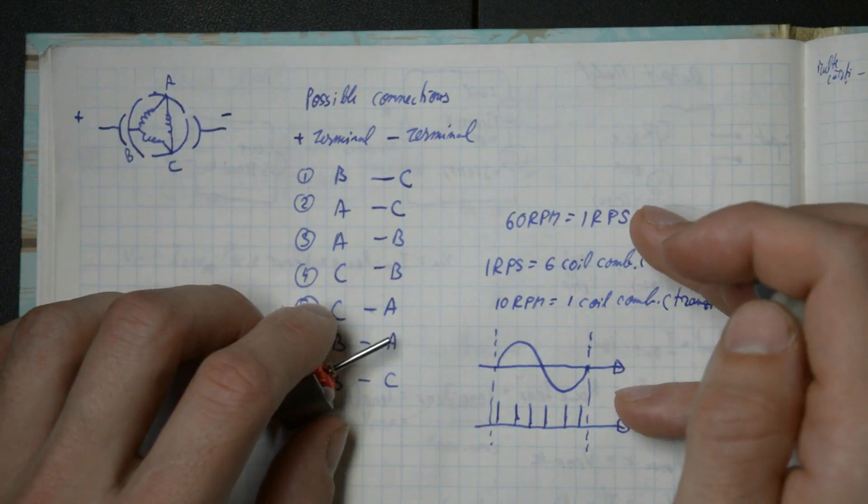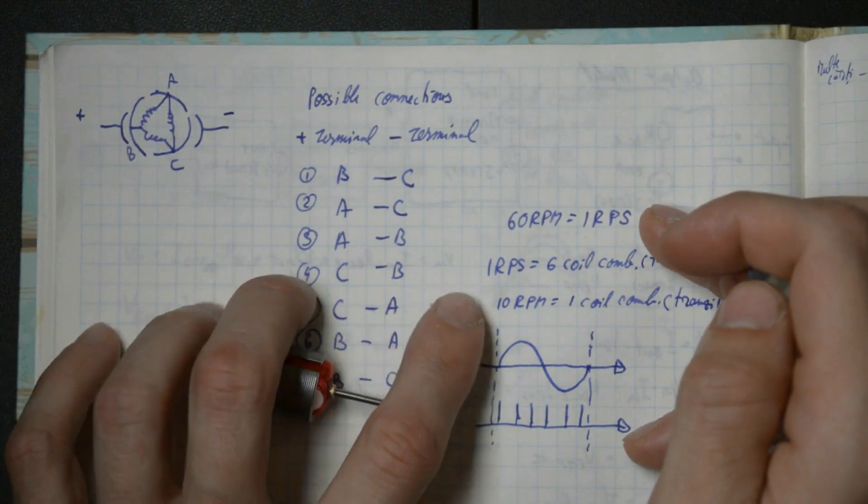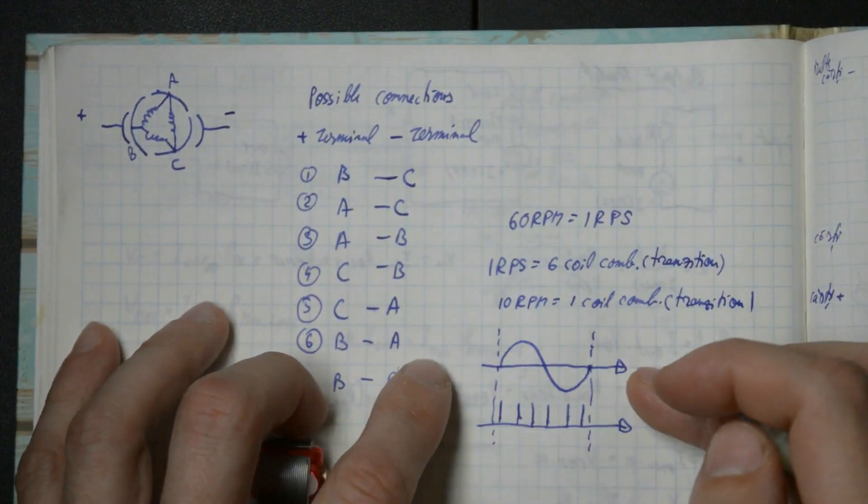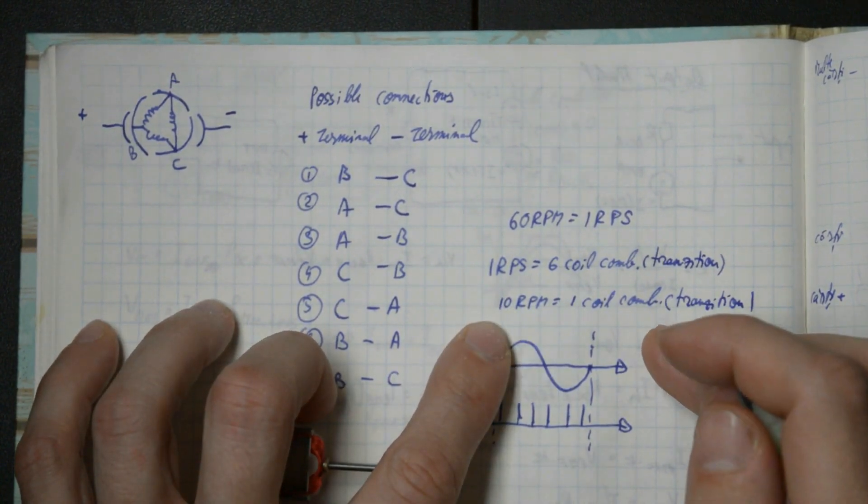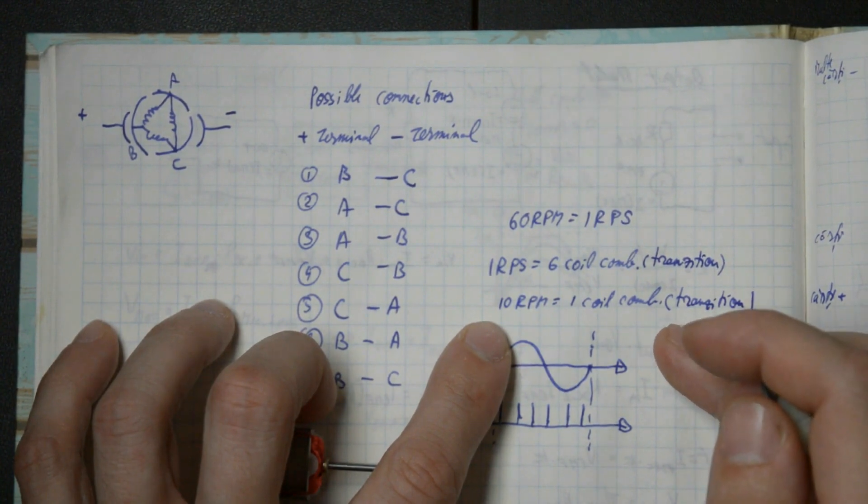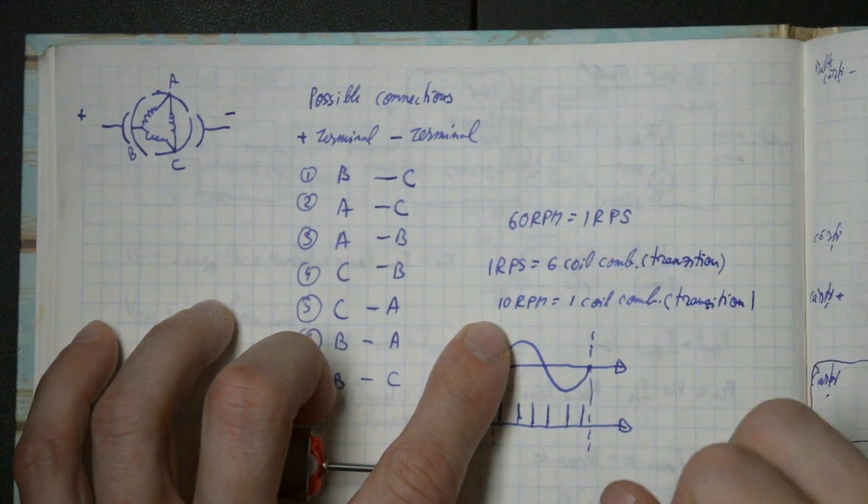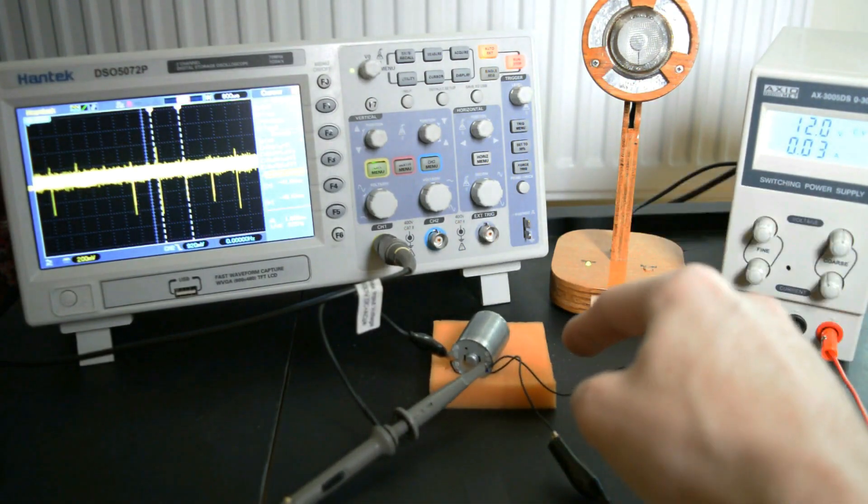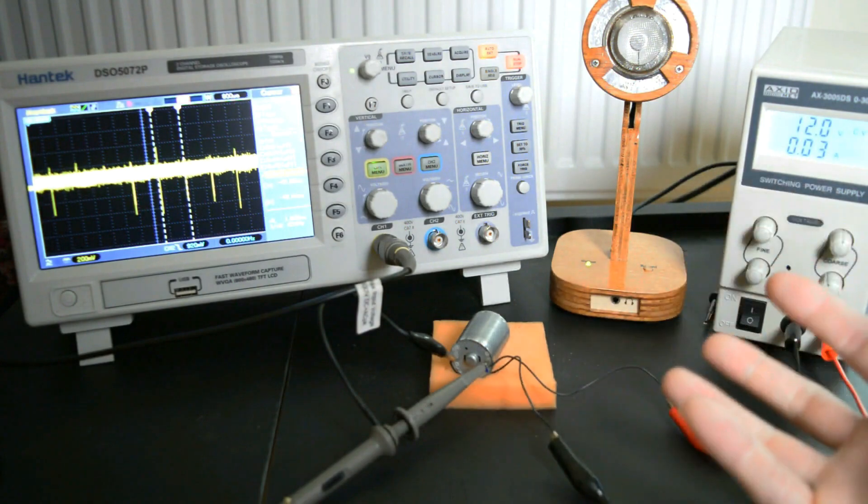Now, if we say that 60 rotations per minute is equivalent to one rotation per second, and that during one complete rotation, we've got six of these transitions, then we can say that 10 rotations per minute correspond to one coil transition. In other words, if we know the frequency of the transitions, we can multiply that by 10 and end up with the speed of the motor. We can work out that this motor is turning at 6,250 RPM. So from this noise information, we can actually deduce what the speed of the motor is.